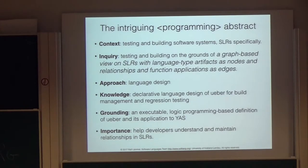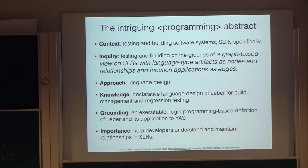The inquiry is basically trying to understand the repository as a graph, in the sense that the artifacts in the repository are the nodes, typed by languages. The edges in the graph are the relationships, such as conformance and transformation. The approach is a language design research paper, so we try to define a language for managing this graph.